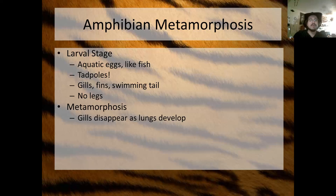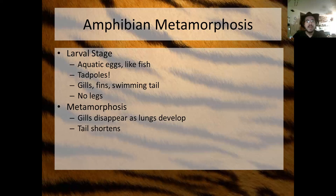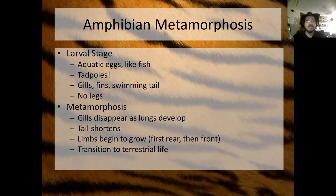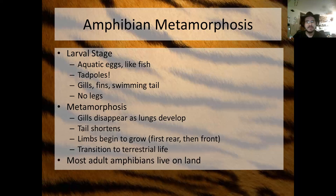During metamorphosis, the gills disappear as the lungs develop. The tail shortens and the limbs begin to grow — first the rear limbs, then the front limbs. Eventually the tadpole transitions to a terrestrial-based life cycle. Most adult amphibians live on land, which is pretty cool.